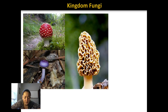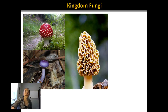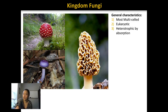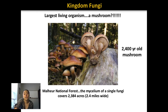Objective six: identify the hyphae, mycelium, and sporangia in fungi and note the functions of each. Fungi are very diverse — there are many different types of mushrooms. Their general characteristics are that most of them are multi-celled, eukaryotic, heterotrophic by absorption, and they have cell walls. One thing you might not be aware of is that the largest living organism in the world is believed to be a mushroom — a single mushroom that is actually 2.4 miles wide, estimated to be about 2,400 years old.